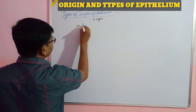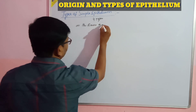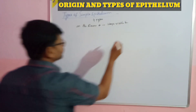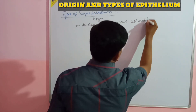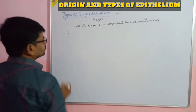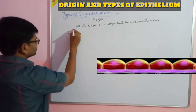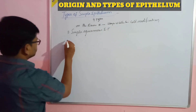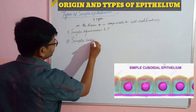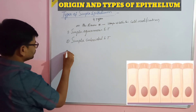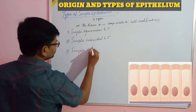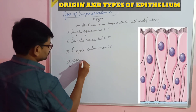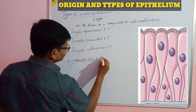Simple epithelial tissue is again broadly divided into four types on the basis of shape of cells and cell modifications. The four types are: simple squamous epithelium, simple cuboidal epithelium, simple columnar epithelium, and pseudostratified epithelium.